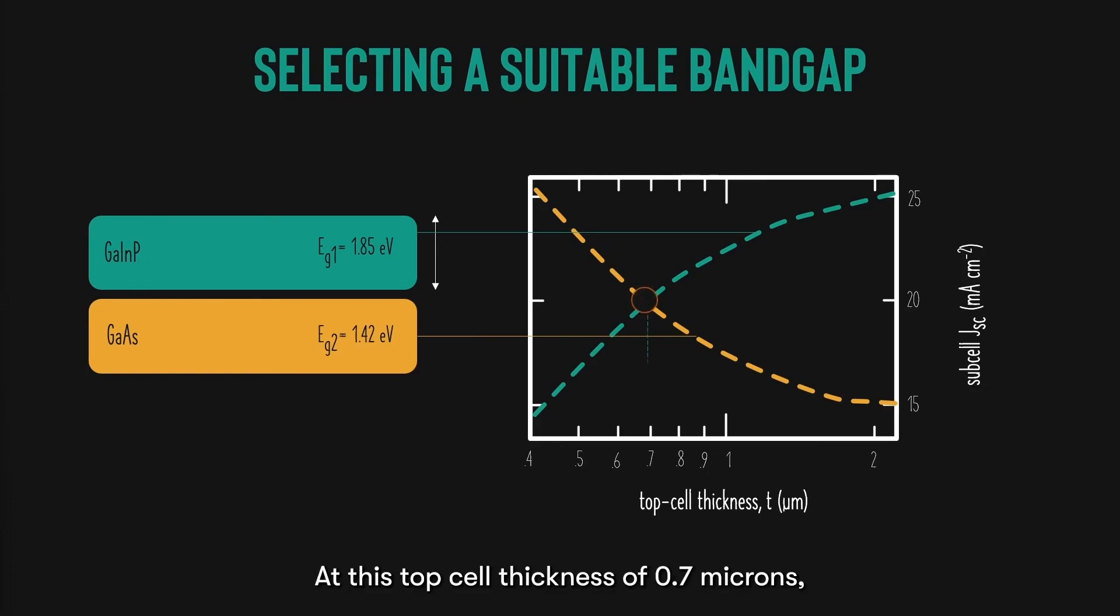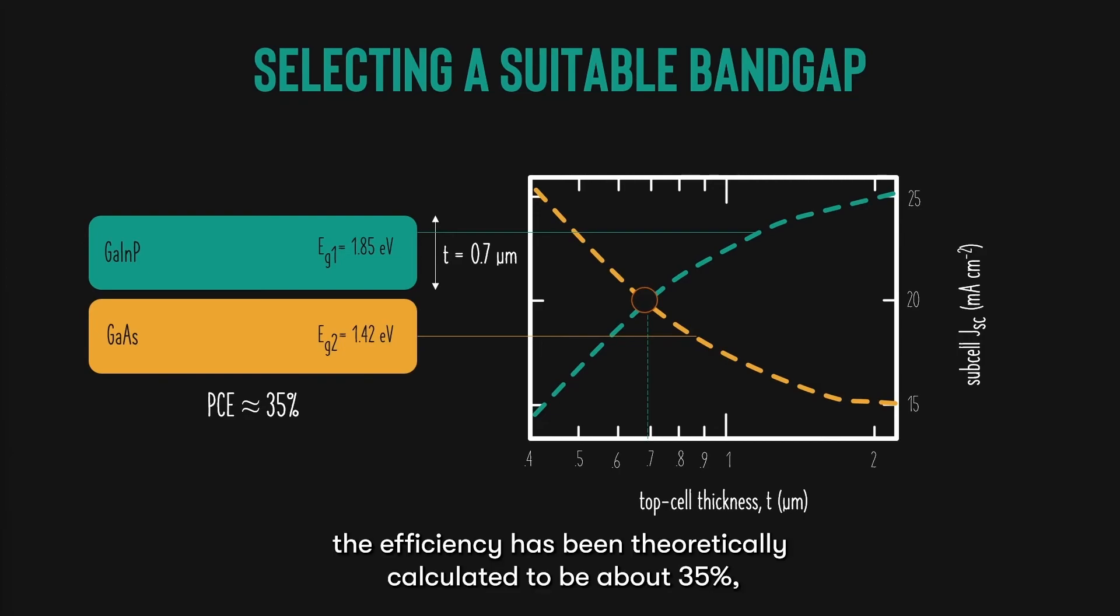At this top cell thickness of 0.7 microns, the efficiency has been theoretically calculated to be about 35%. An additional 5% compared to the previous case with an infinitely thick top cell.